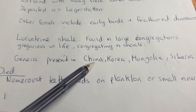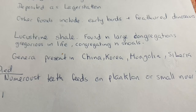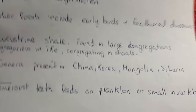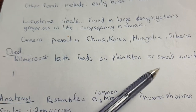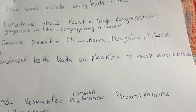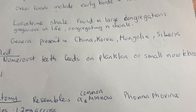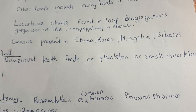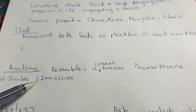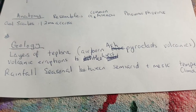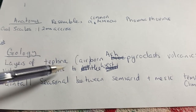The genus Lycoptera is also found in Korea, Mongolia, and Siberia, so it's spread across a lot of eastern Asia. The only part of the anatomy I've found so far regarding teeth is that there are numerous teeth — I'm not too sure exactly how many. It feeds on plankton or small invertebrates, probably insects, given it has small conical teeth. If it fed on shellfish it would need a much stronger jaw — pointy teeth are not really useful for shellfish. It resembles a common minnow and the scales are usually about 1.2 millimeters across, so very small.